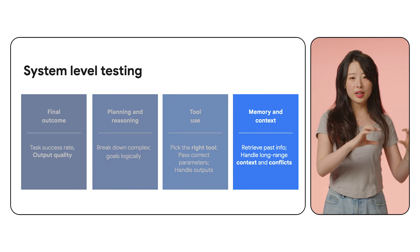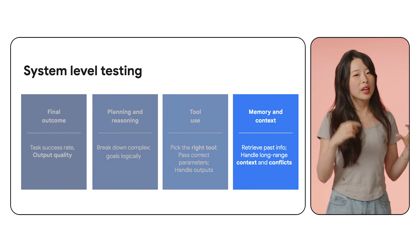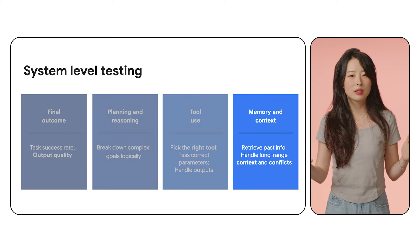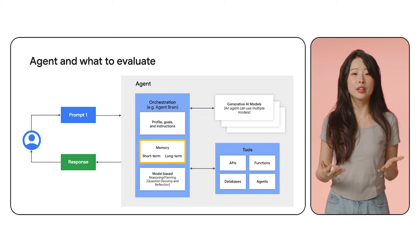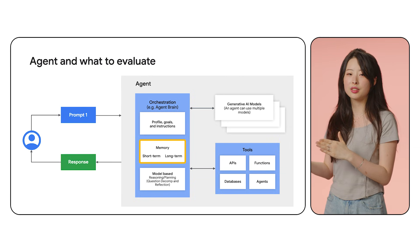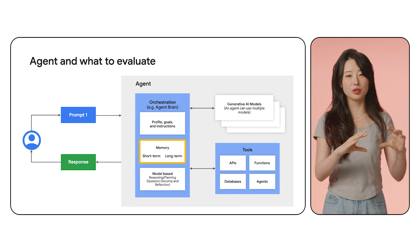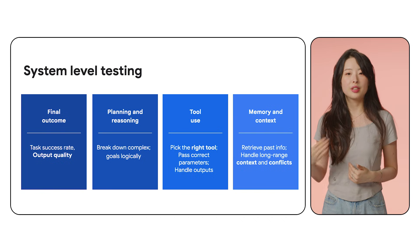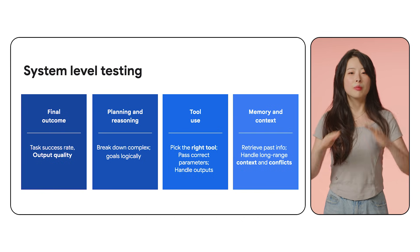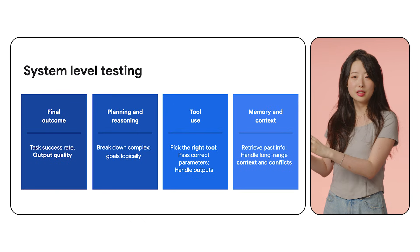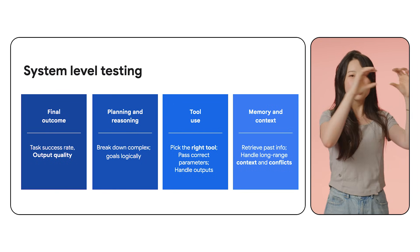And lastly, there is memory and context. You need to check whether the agent remembers what really matters — does it retrieve past information accurately and handle long-range context and conflicts? For RAG (retrieval-augmented generation), we check contextual precision and recall. When evaluating an agent, a bad answer might come from a tool issue, a reasoning gap, or a memory failure. So it is very important to measure each layer to help you debug.